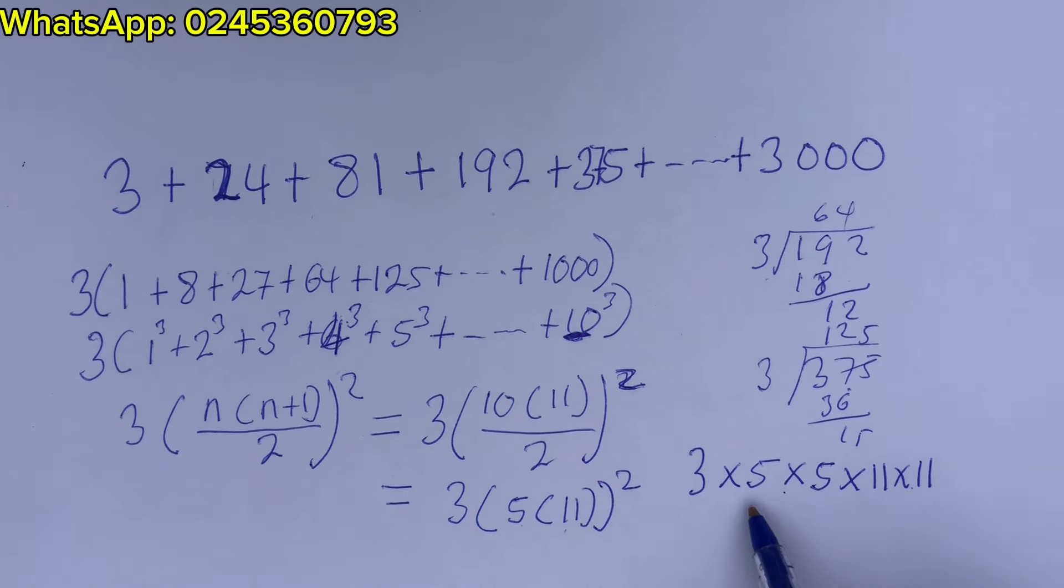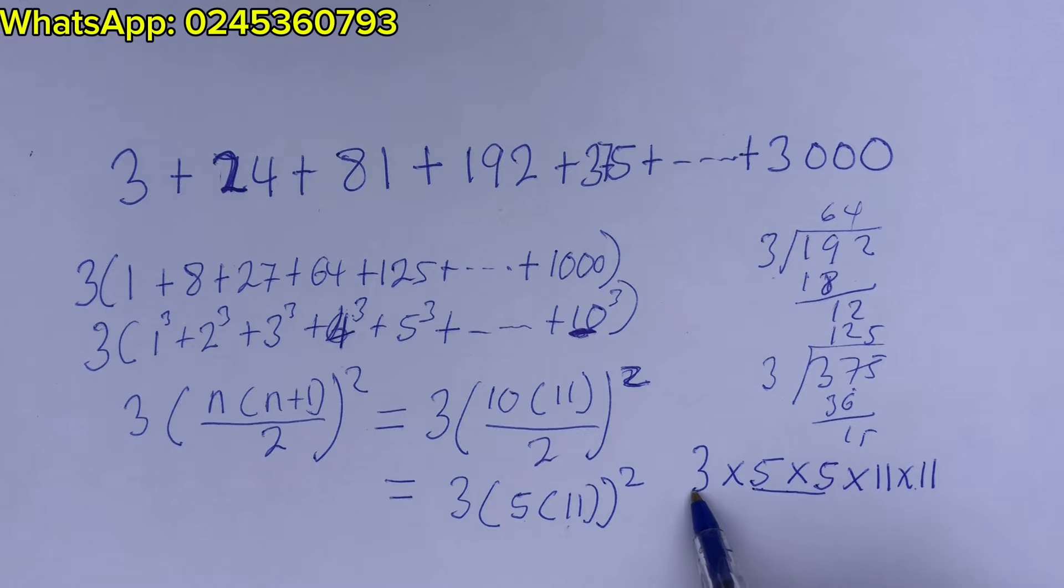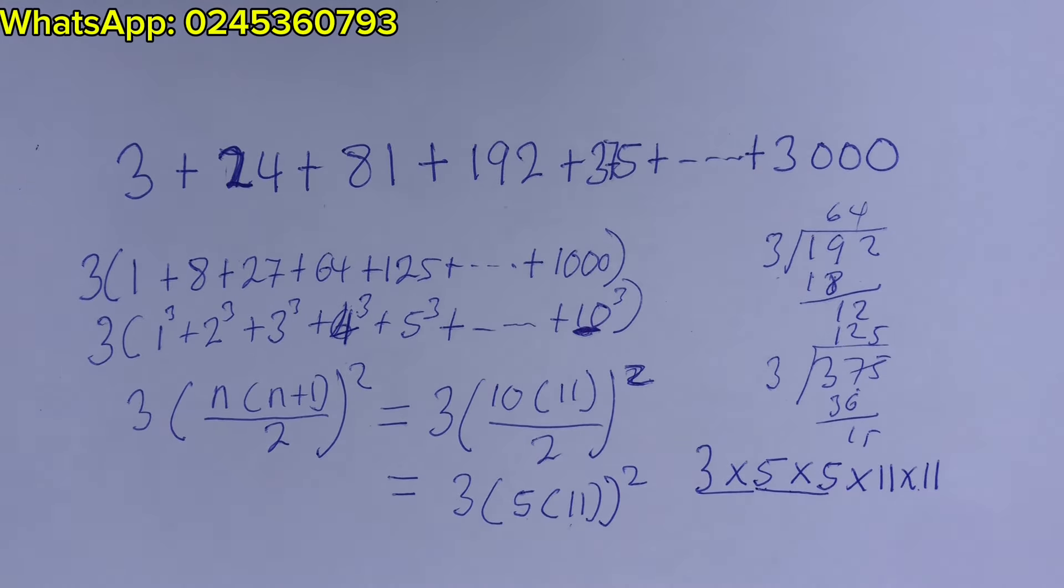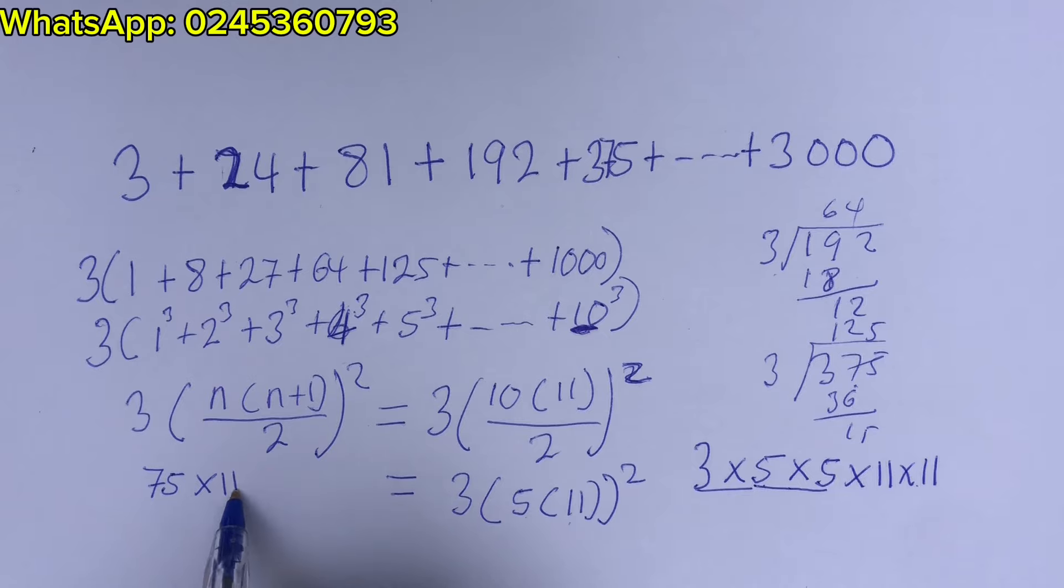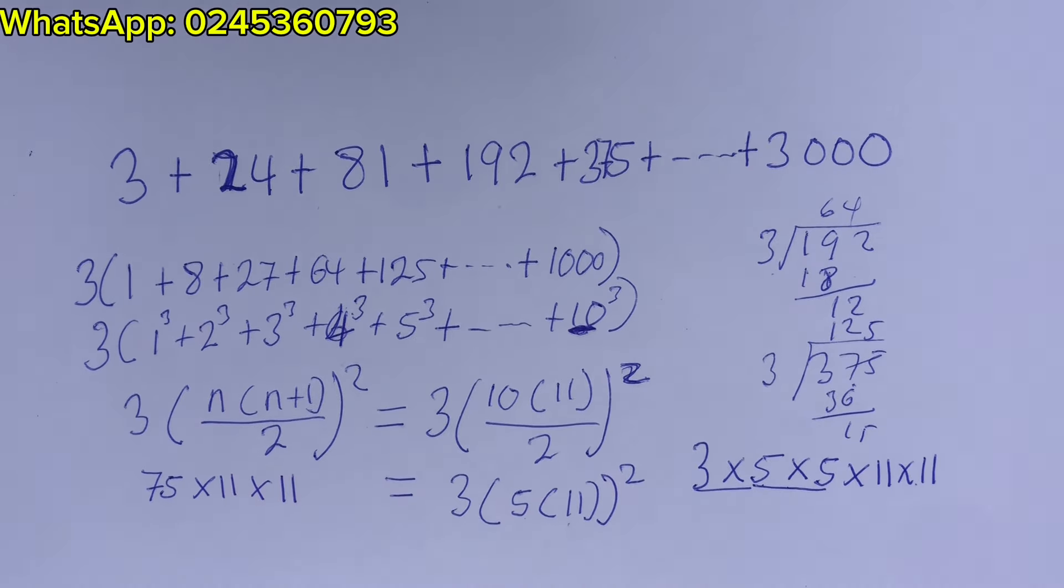So how do we do that? This is 5 times 5 is 25 times 3 is 75. So we have 75 times 11 times 11 which is quite easier for us to do.